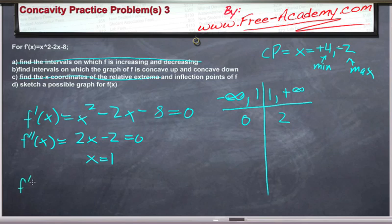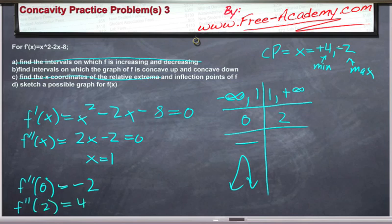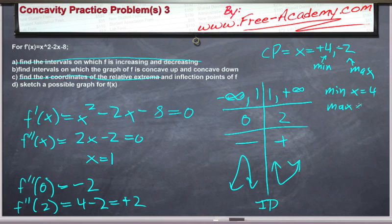The second derivative of 0 is going to equal negative 2. So that's negative, and it's concave down. And then the second derivative of positive 2 is going to be equal to 4 minus 2, which is equal to positive 2. So if it's positive, that's concave up. Whenever you switch from one type of concavity to another, you get an inflection point. So we have a min at x equals 4, max at x equals negative 2, and an inflection point at x equals 1.